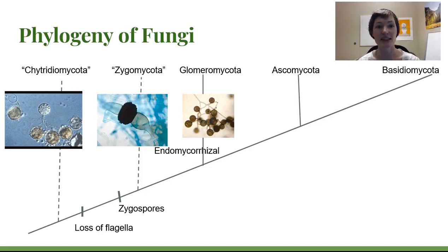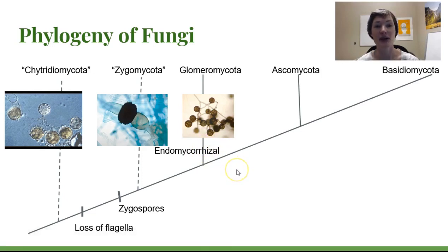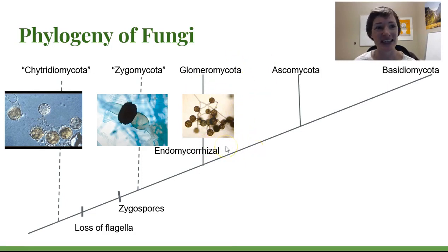This is part three and the final video for our microfungi lecture. Here we are going to look at the Glomeromycota, and these are united by the characteristic of being endomycorrhizal. It's possible that some lineages within Glomeromycota are not endomycorrhizal, but the ones we'll talk about are in reference to this being endomycorrhizal.